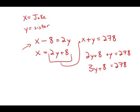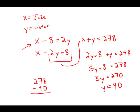Subtract 8 from both sides. We get 3y equals 270. Divide by 3. y equals 90. We have to be very careful — this is not the answer. This is the weight of the sister. So if the sister weighs 90, and together their weights are 278, just subtract 90 from 278, and what we get is 188.